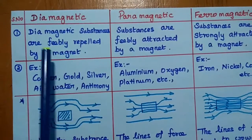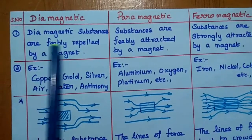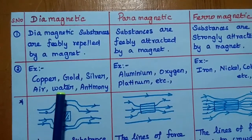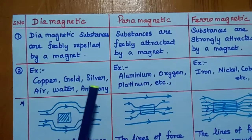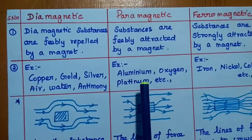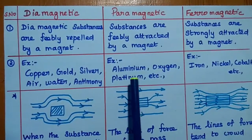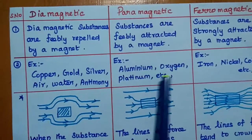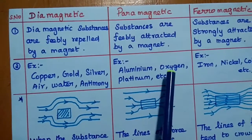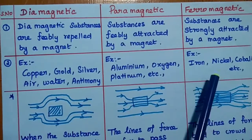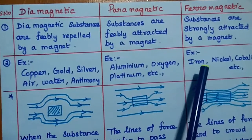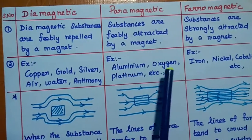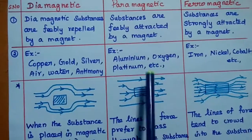For diamagnetic materials — feebly repelled by a magnet — examples include gold, copper, silver, air, water, antimony, and bismuth. Examples of paramagnetic materials include aluminium, oxygen, and platinum. Ferromagnetic materials include iron, nickel, and cobalt. These are the examples of the different types of magnetic materials.